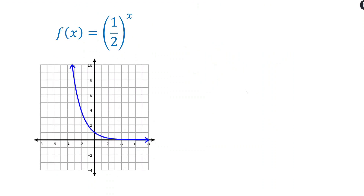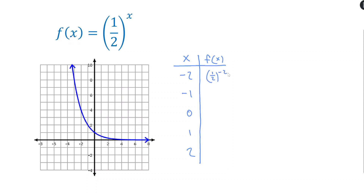Let's try another example — this time we can visually see the function is decreasing. Let's make our table and plug in negative 2, negative 1, 0, 1, and 2. What happens when I raise 1/2 to the negative 2 power? Applying the rule directly: that's 1 over (1/2) squared. Since (1/2) squared is 1/4, and 1 divided by 1/4 is 4, we get 4.